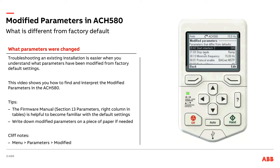I can see that I've got start interlock two, so I have a second safety wired and configured for digital input five. Normally, I just have start interlock one, the factory default, on digital input four. So maybe this is an air handler and I have not only a high static safety on DI four, but maybe I've got a freeze stat up here in Wisconsin on DI five.